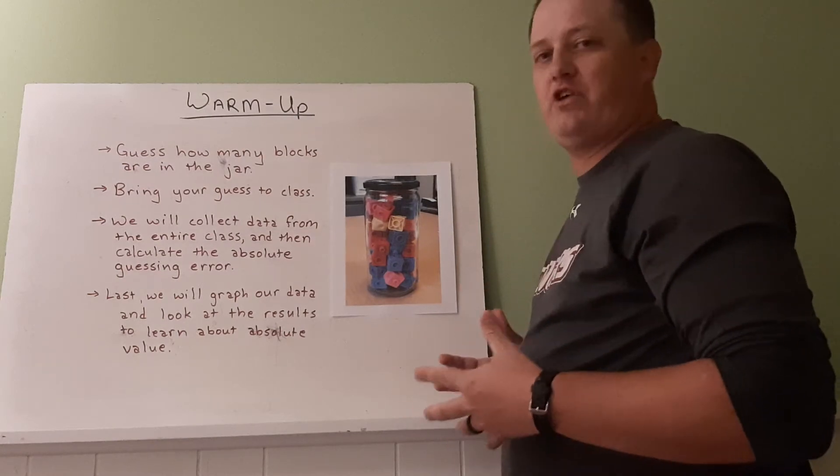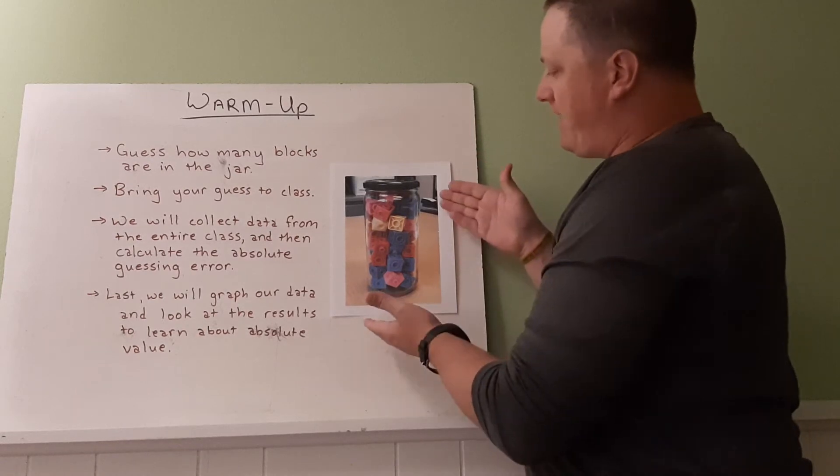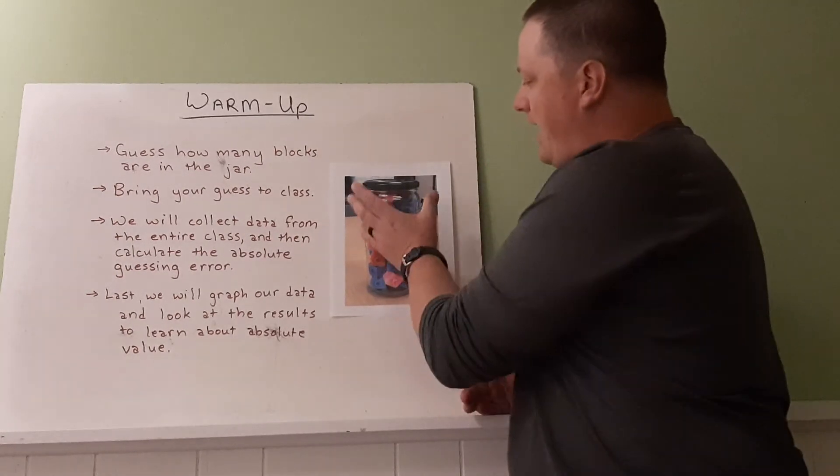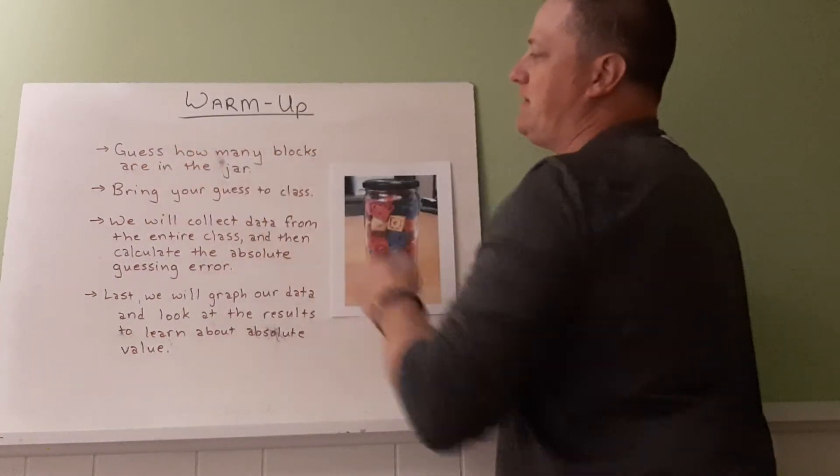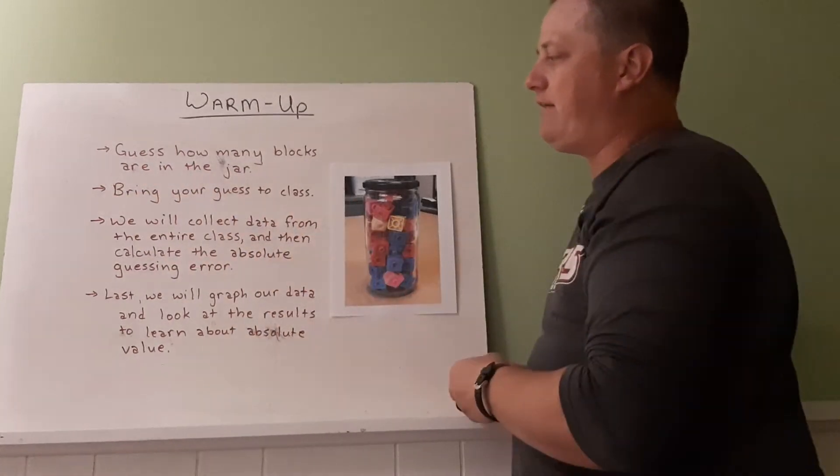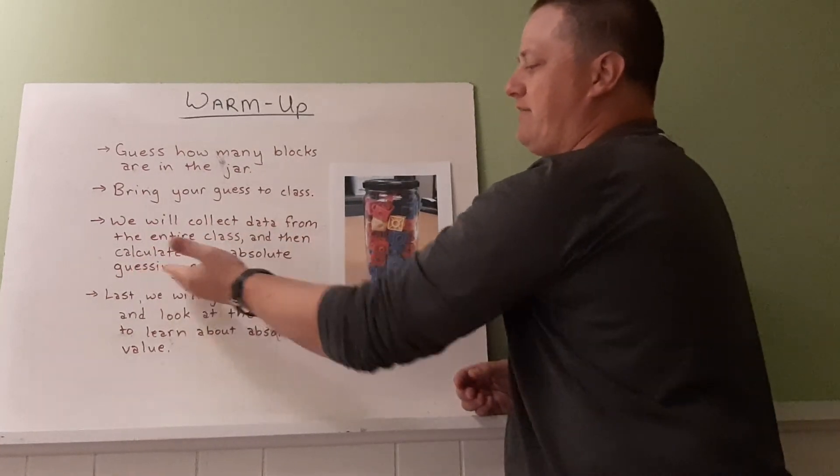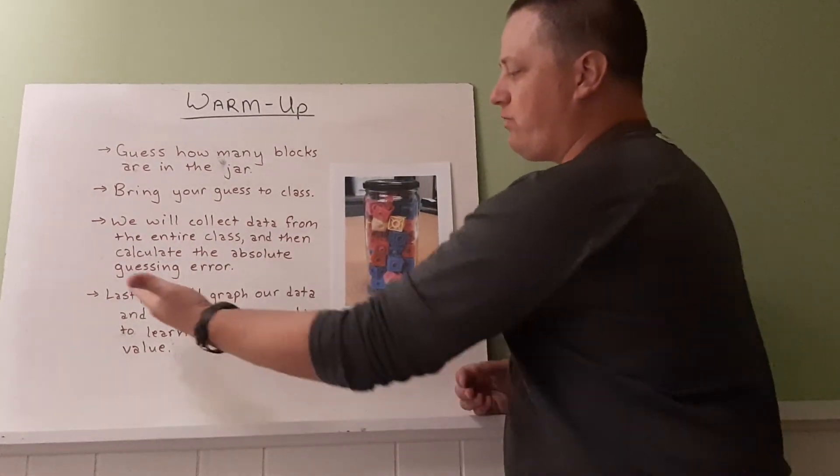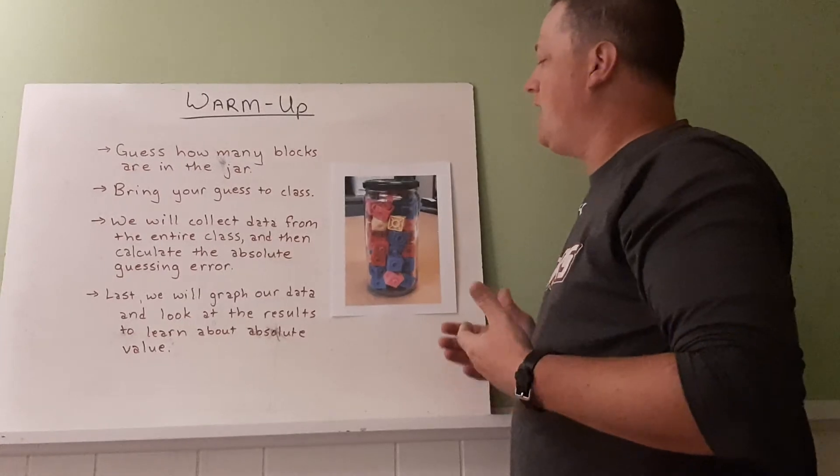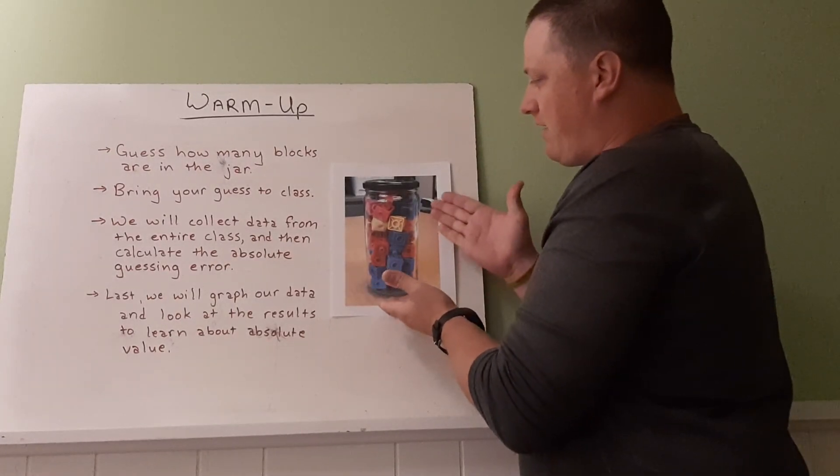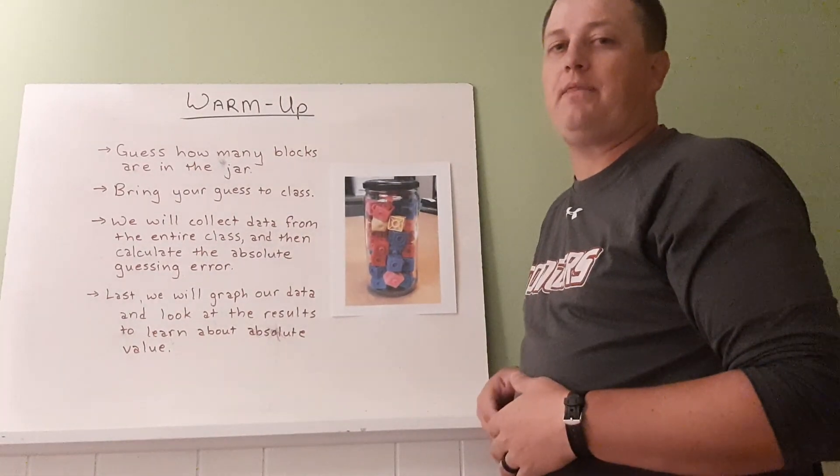Alright, so your warm-up is just to take a guess. Here I have a picture of a jar, and that jar is full of blocks. I want you to guess how many blocks it takes to fill the jar. Guess how many blocks are in the jar. Then tomorrow, bring your guess to class. Next, we're going to collect the data from the entire class, and then calculate the absolute guessing error. Last, we will graph our data and look at the results to learn about absolute value. So, again, guess how many blocks are in this jar, and then bring that guess to class tomorrow. That will start our work. Thanks.